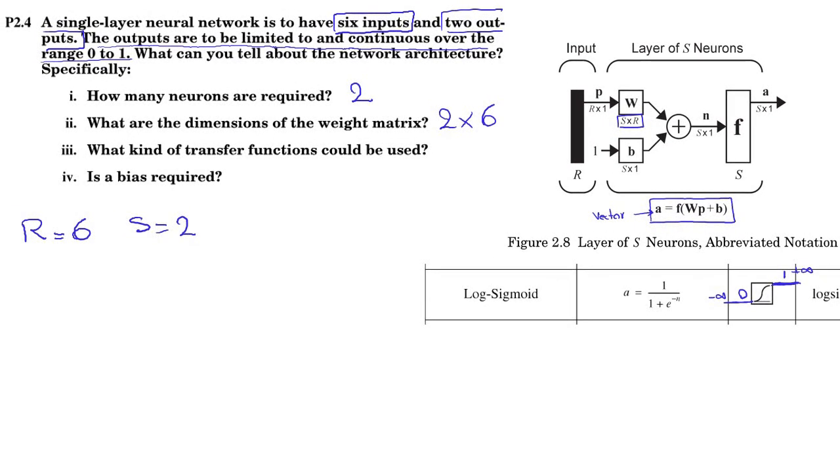So, that's the answer to this question. What kind of transfer function we can use? We can use log sigma. And the last question is, is bias required? We could say yes or no, because we don't have enough information to find out if it is required or not for this question.